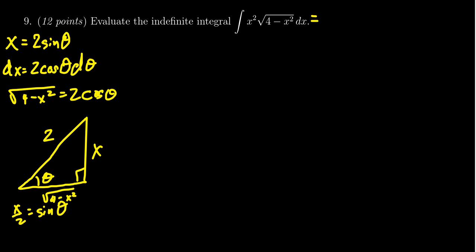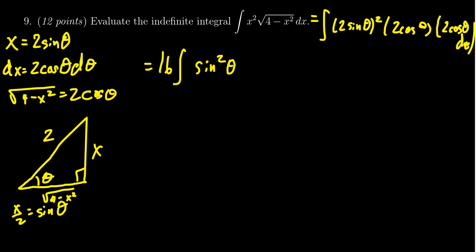So next what we want to do is we want to plug all these pieces in there. The x squared becomes a two sine. Remember to square that. The square root becomes a two cosine. And then the dx becomes a two cosine as well, d theta. Putting that together, of course, we're going to have two squared times two times two. So we get a coefficient of 16. I'm just going to bring that out of the integral. We end up with a sine squared. And then we also have a cosine squared there, d theta.